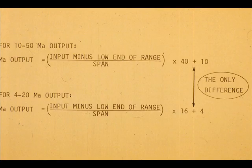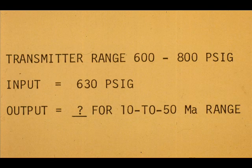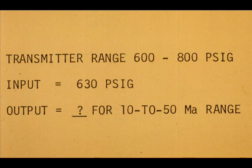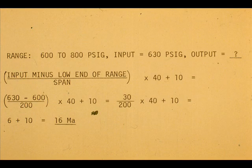The only difference in the two formulas is the output span and starting current. For an example, we shall calculate the milliamp output for a 600 to 800 PSIG range transmitter having a 630 PSIG input. The answer is 16 milliamps.